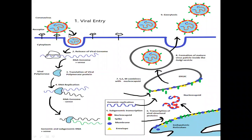As a result of TMPRSS2 cleavage, the virus enters inside the cells through early and late endosomes. Once inside the cytoplasm, another host protease — cathepsin L — further cleaves the S protein at low pH. This leads to fusion of the viral envelope with the phospholipid membrane of the endosomes, resulting in the release of the viral genome into the cell cytoplasm.